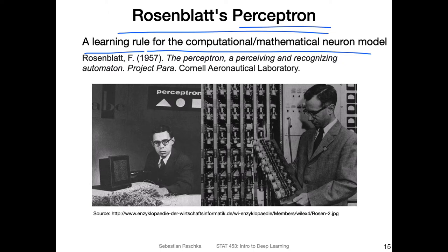This offers us something that can help us find the weights automatically to make classifications. Previously, we've seen how we can manually implement AND and OR functions using specific weights and a certain threshold. Now with the perceptron, we can find automatic weights for different types of problems like classification in general. Back then, the perceptron was actually a hardware device where Rosenblatt had to plug in and plug out certain cables to reach certain decisions.